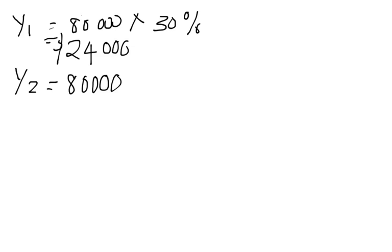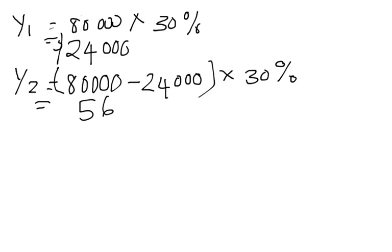We only have one year so far, so it's $80,000 minus $24,000 times the rate, 30%. So $80,000 minus $24,000 gives us $56,000 multiplied by 30%, which equals $16,800.